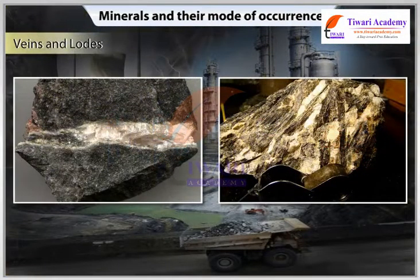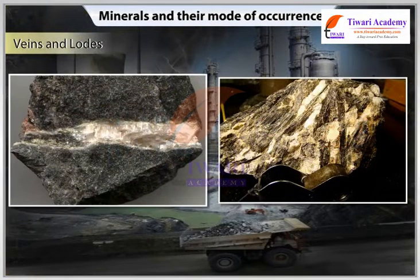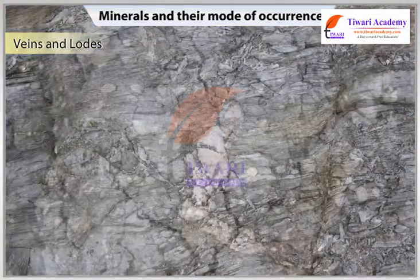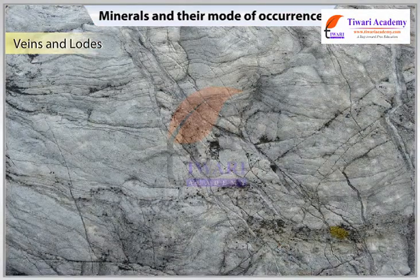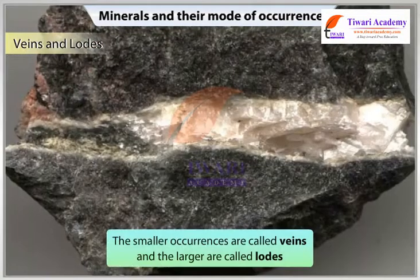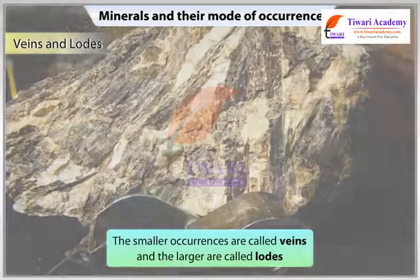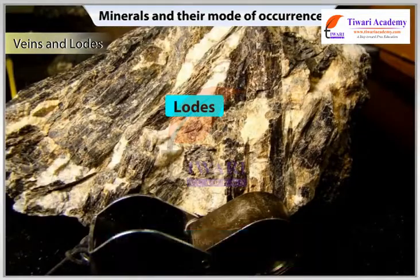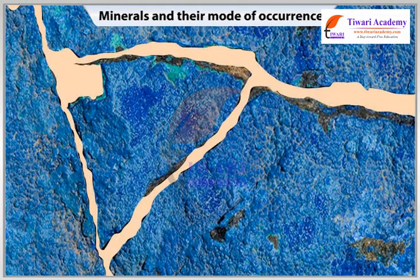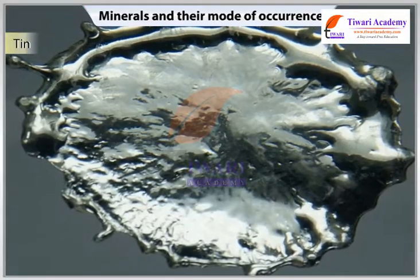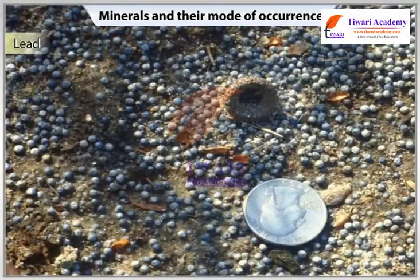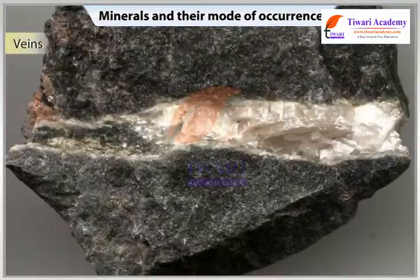Let us now learn about the mineral forms: veins and lodes. In igneous and metamorphic rocks, sometimes minerals occur in the cracks, crevices, faults or joints in small or large amounts. The smaller occurrences are called veins and the larger are called lodes. The mineral deposits that form when a mineral fills cracks in rocks are called veins. Major metallic minerals like tin, copper, zinc and lead are obtained from veins and lodes.